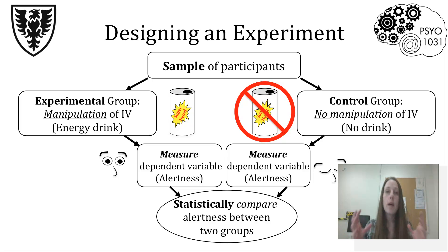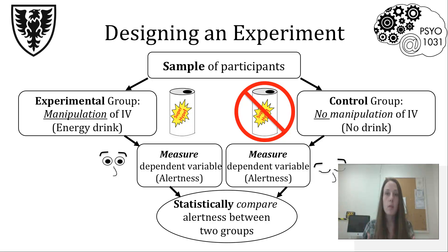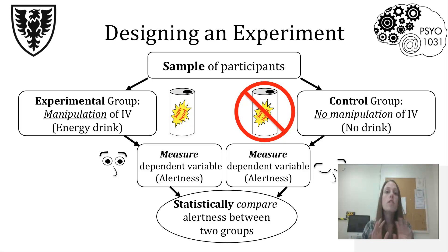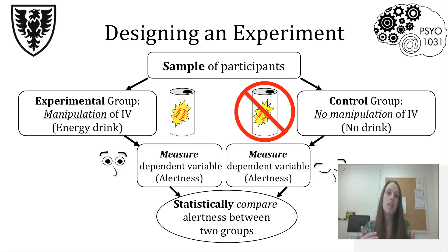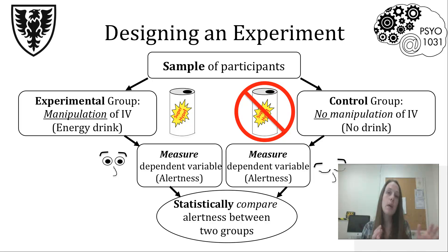Our independent variable has to do with the drink — did they get an energy drink or not? Our dependent variable is alertness. For both groups it's the same dependent variable and we compare the outcome on that variable to see if there was any effect. Change and effect — independent variable and dependent variable — manipulation and measuring. That's how you can remember the difference between an independent variable and a dependent variable. Thanks.